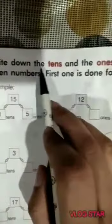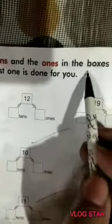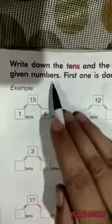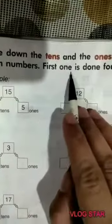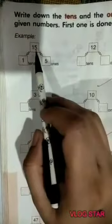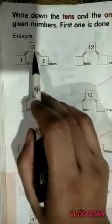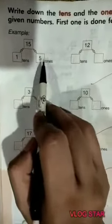Now, look at page number 26. Read first. Write down the tens and the ones in the boxes for the given numbers. First is done for you. Look, it's a number 15. We have to divide it into two parts. One part is one tens and second part is five ones.